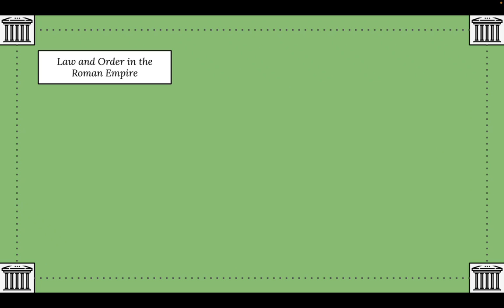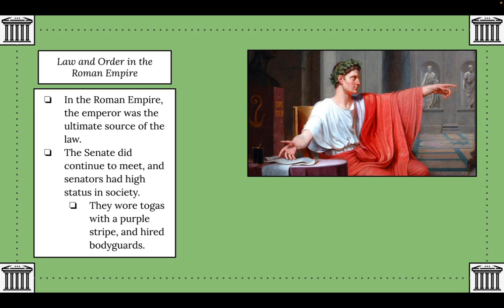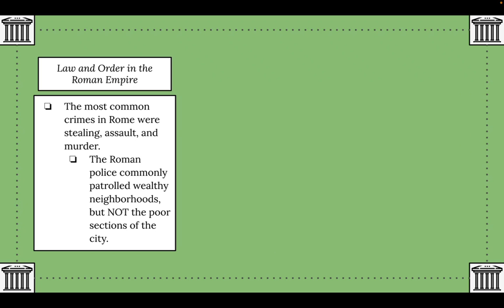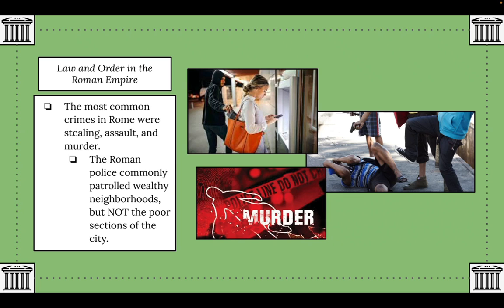Our first topic is law and order in the Roman Empire. The emperor was the ultimate source of the law. The Senate continued to meet and senators had high status in society — they wore togas with a purple stripe, probably silk traded with China, and hired bodyguards to protect themselves. The most common crimes in Rome were stealing, assault, and murder. The Roman police commonly patrolled wealthy neighborhoods but not the poor sections of the city.